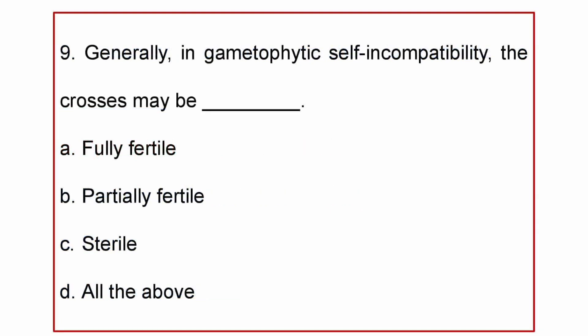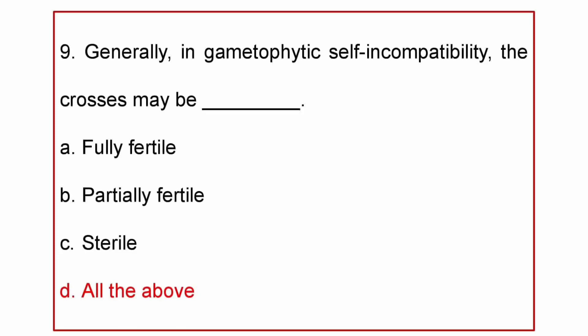Next question. Generally in gametophytic self-incompatibility, the crosses may be: A. Fully fertile, B. Partially fertile, C. Sterile, or D. All the above. The answer is all the above.